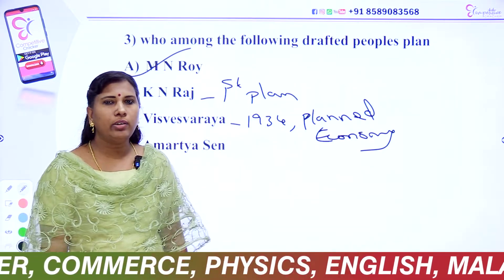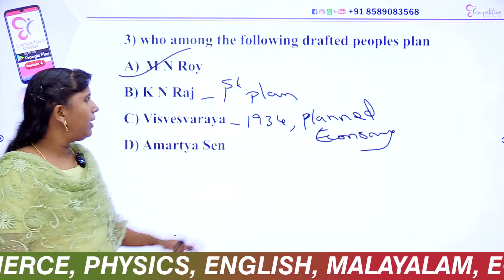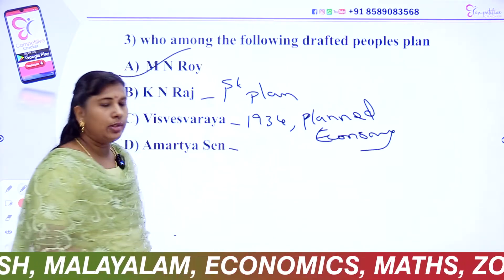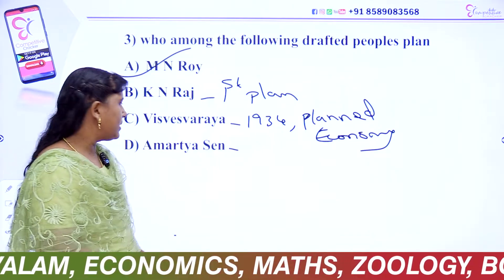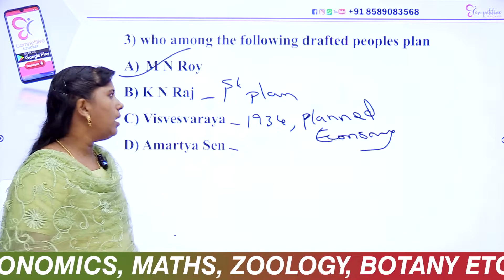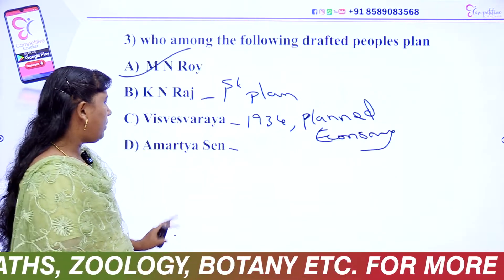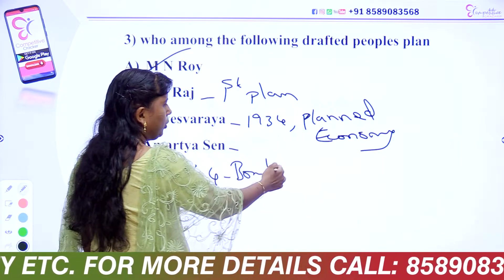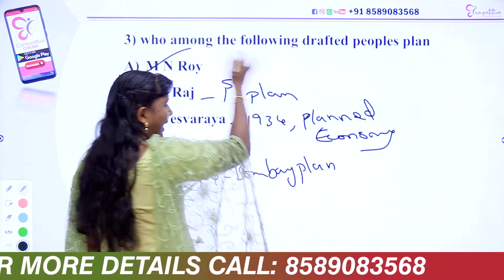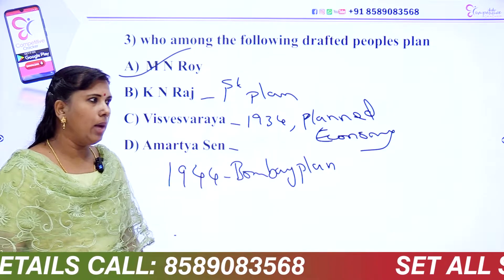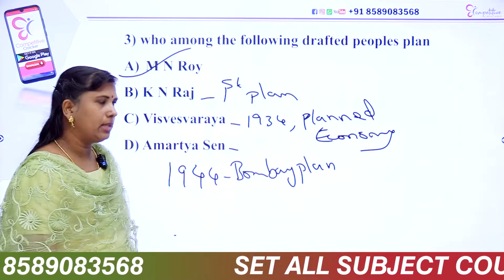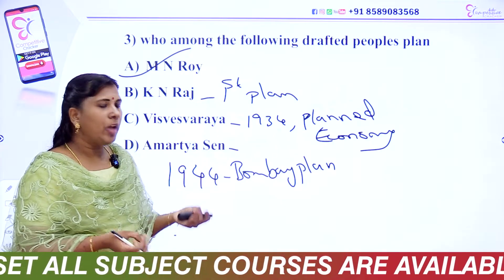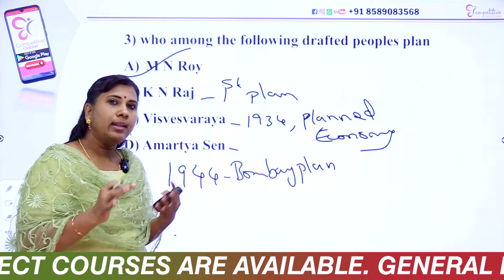One more question about the Nobel Prize topic came up. Now, the point of the People's Plan is the Bombay Plan. The Bombay Plan is a key plan. The point of the People's Plan relates to the idea of the problem.